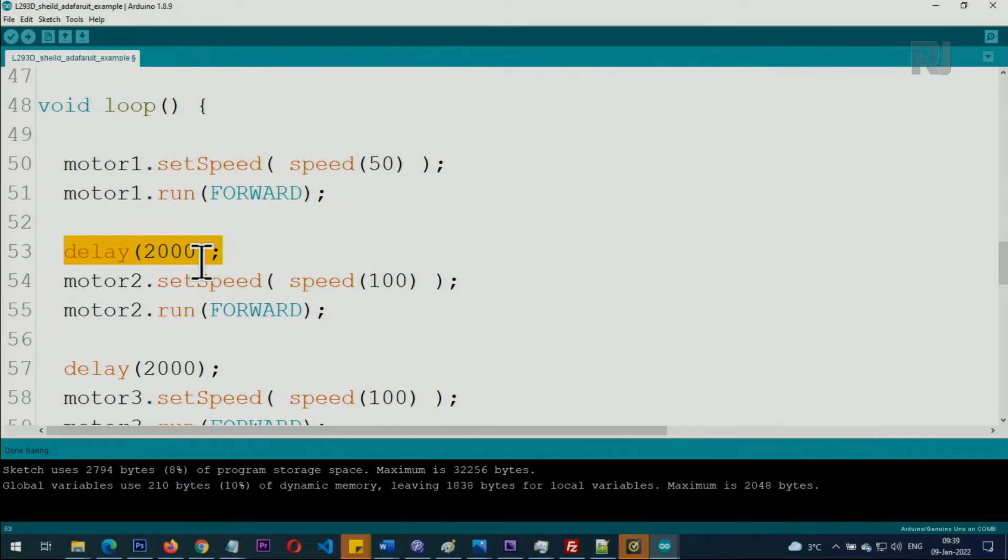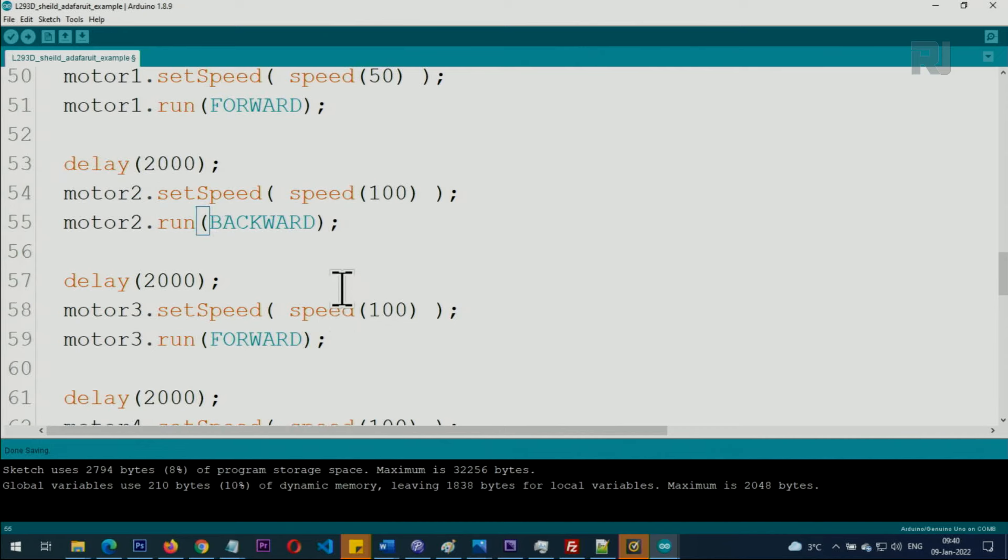So whatever you set it will continue until as long as this is true or after this if you change it. And here after two seconds motor two will turn on with 100 percent, it goes forward. If you want to change it to backward, just say backward and it will go to the backward.